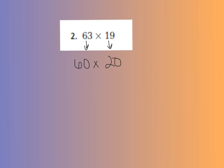Now, we have a 2-digit by 2-digit multiplication problem, but they're both in 10s. And we can solve this by using basic facts. 6 times 2, well, that's 12. And then we can add our two zeros for our place value holders. So the estimate for 63 times 19 is 1,200.